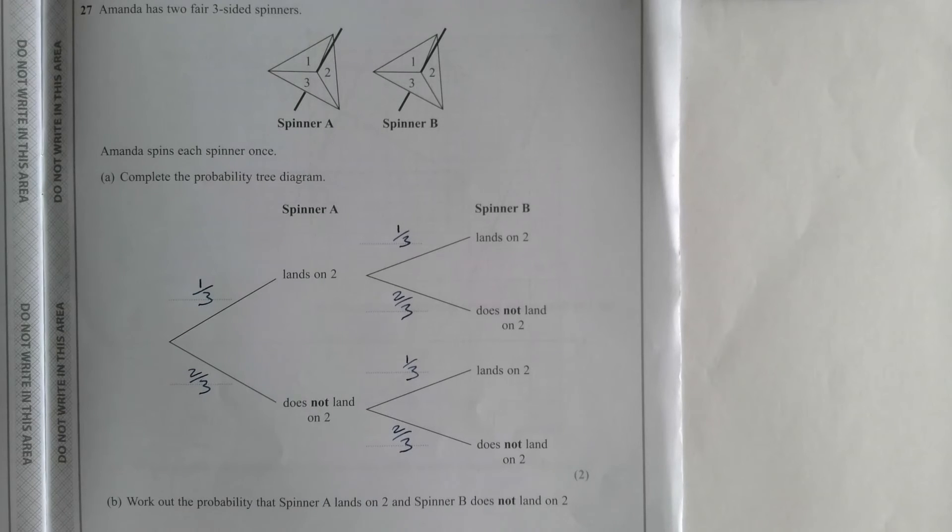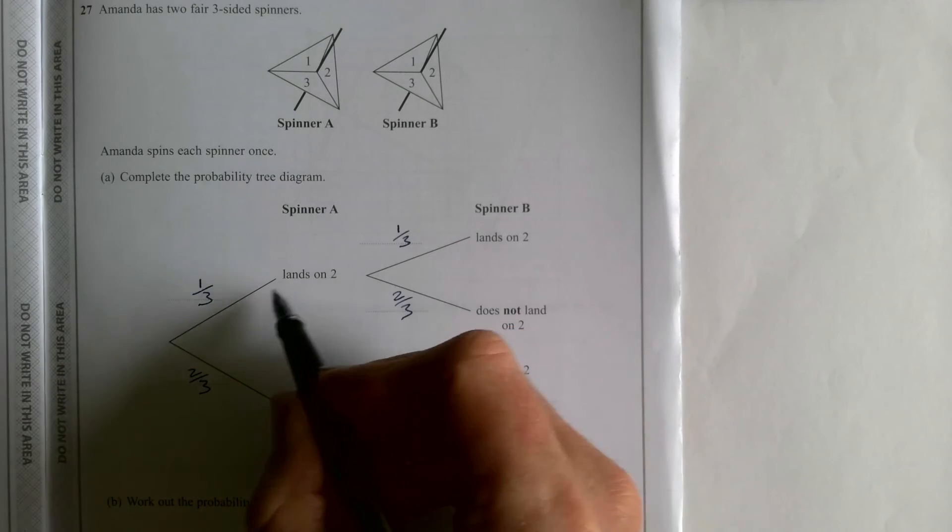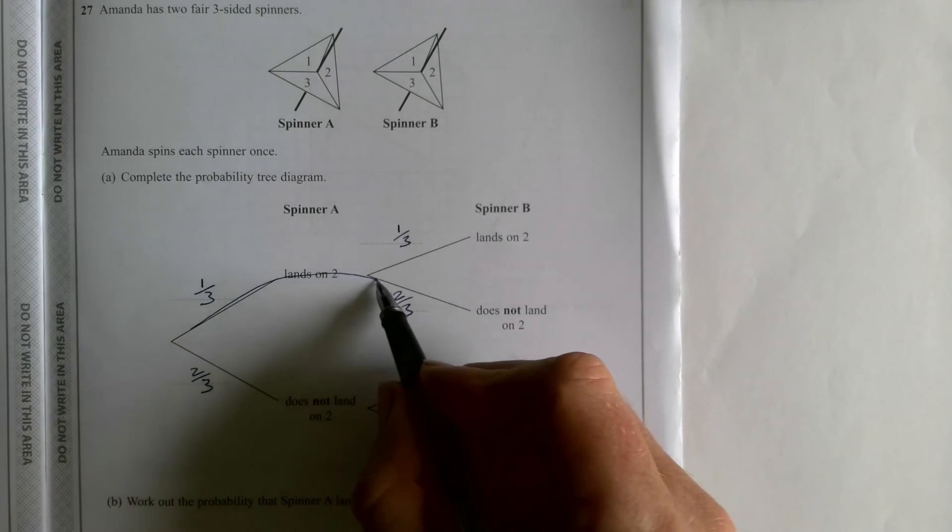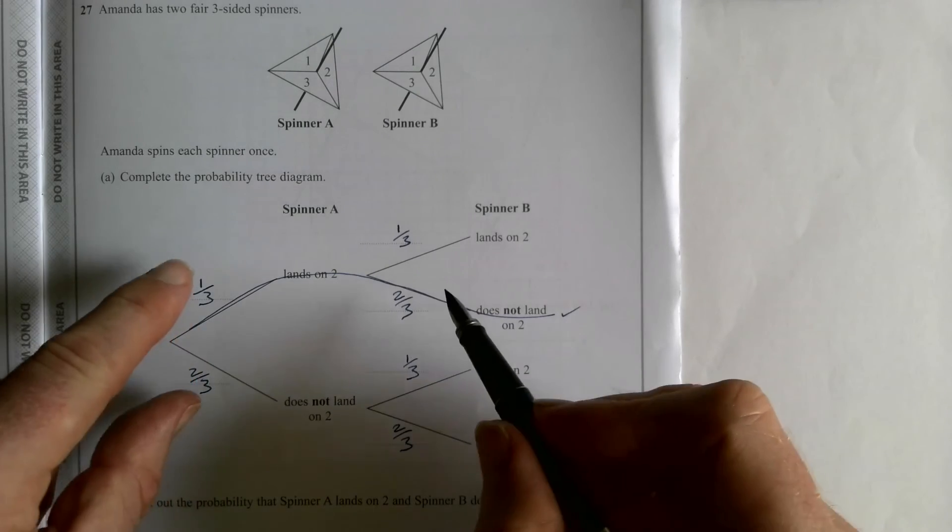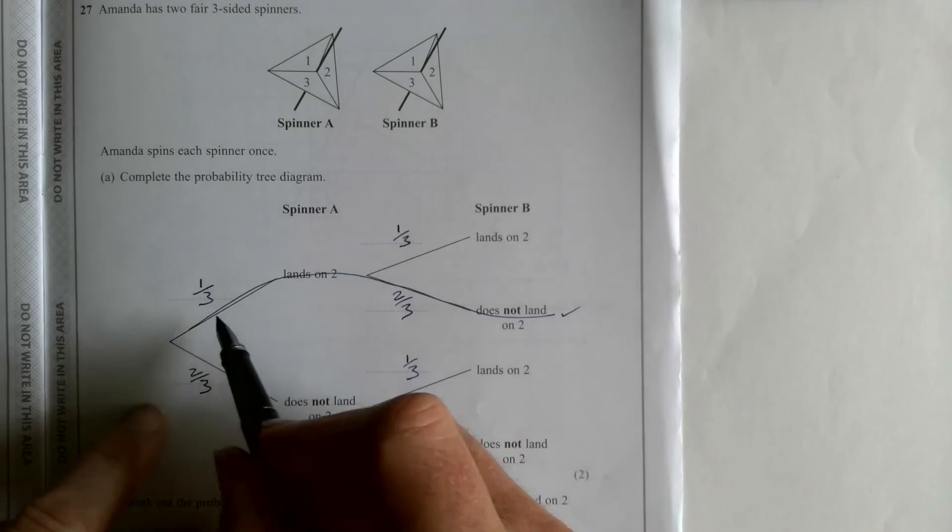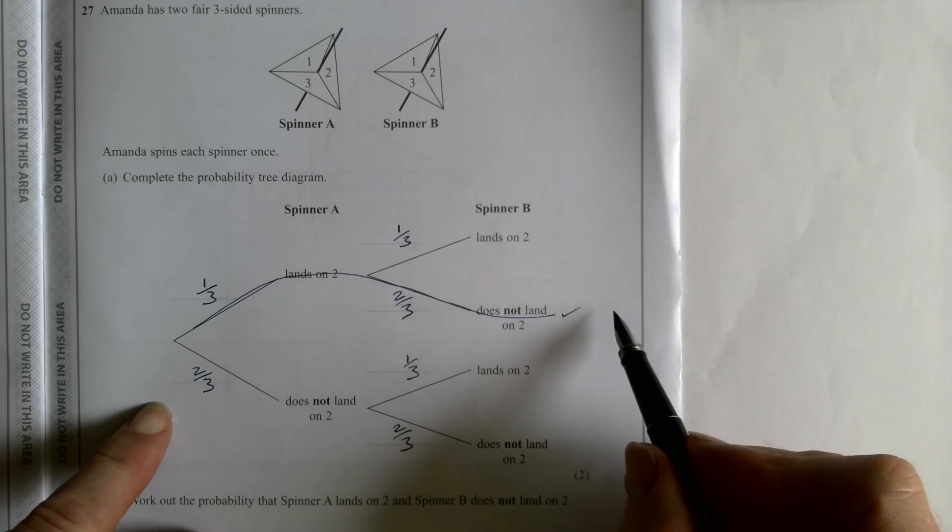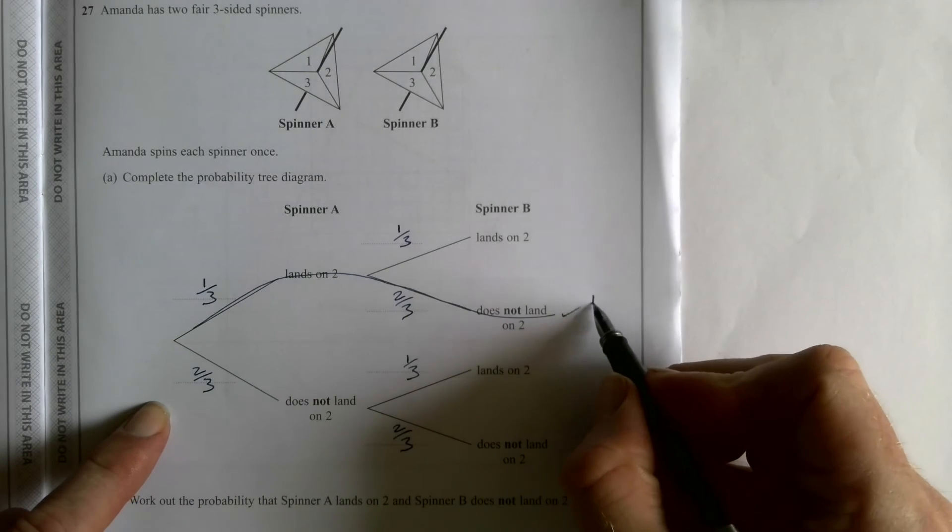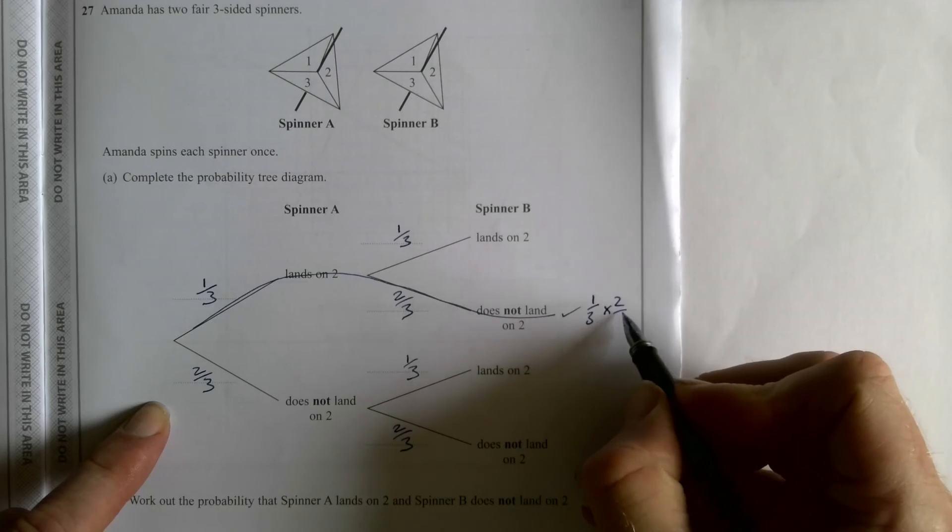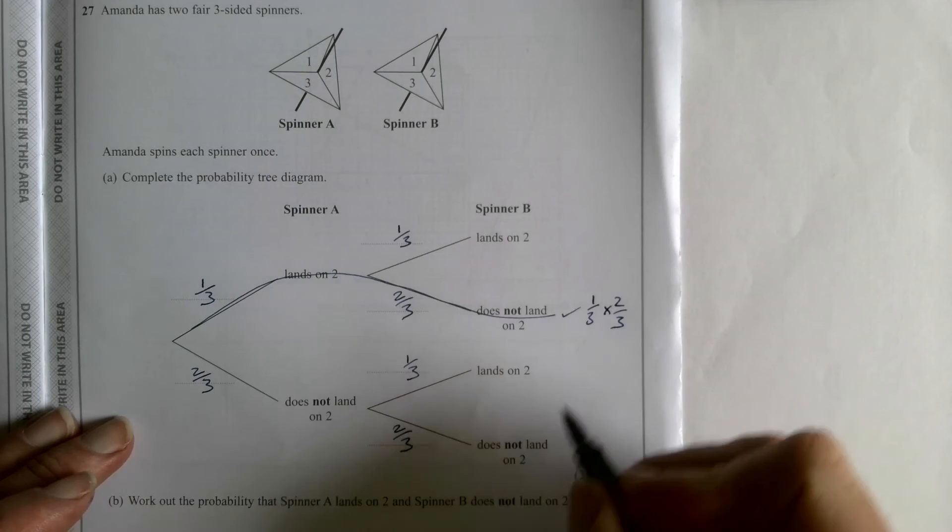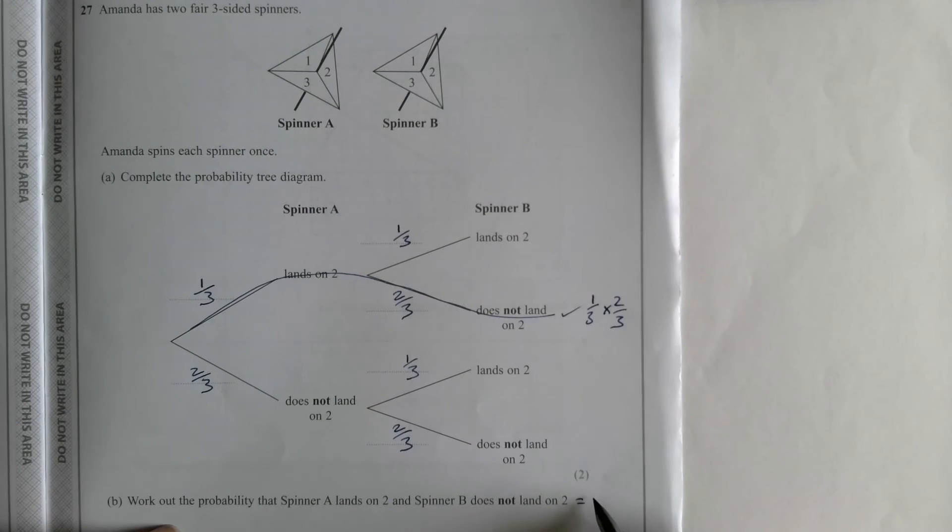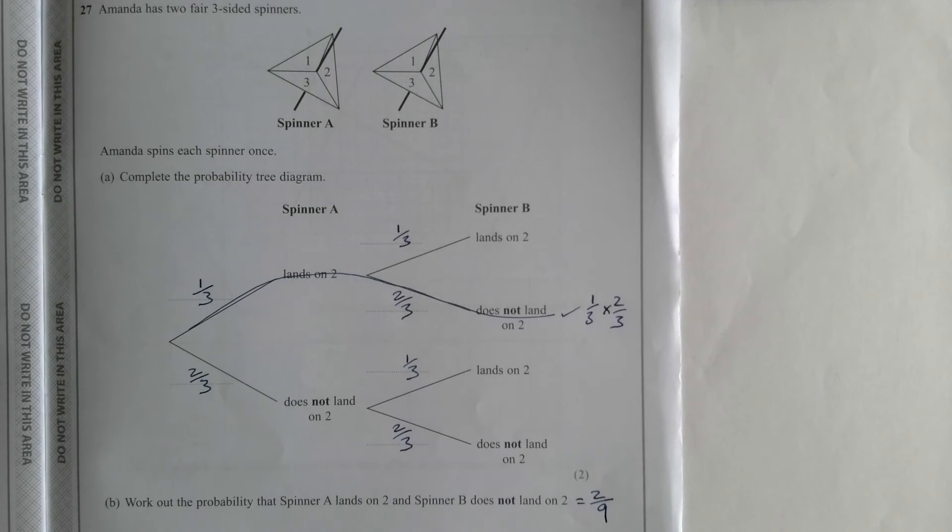Work out the probability it lands on two, but B doesn't. That is going along here and down here, isn't it? And those two, you add between to make them always add up to one. But when you go along here, you multiply along the branches. So it'll be one third times two thirds. And you can put that into your calculator and it will give you two ninths, because you times the top numbers and the bottom numbers when you're multiplying.